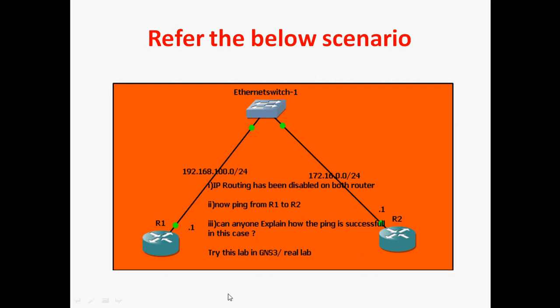On R1 router, on the FastEthernet 0/0 interface, I will assign the IP as 192.168.100.1. And R2 router connecting towards the Layer 2 switch — I will assign that interface the IP as 172.16.0.1.